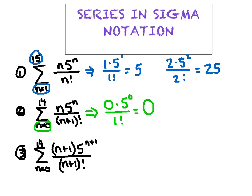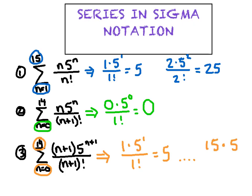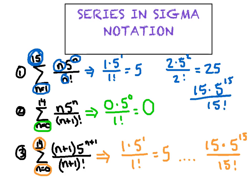Now I'll jump to the third series. The low number says start with n equals zero. Substituting zero for all the n's gives me one times five to the first all over one factorial, which is five — great, it matches the first series. But I always want to stress: check the last term too. Fast forwarding to the last term, I plug in the high number of 14: 14 plus one is 15, times five to the 15th power, all over 15 factorial. Going back to the blue series and plugging in 15 gives the same expression — 15 times five to the 15th over 15 factorial. They match perfectly.